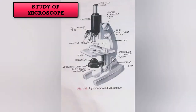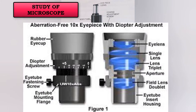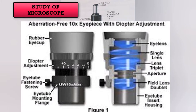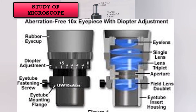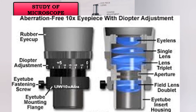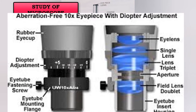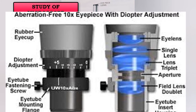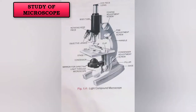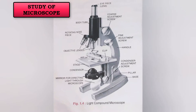Let us study the different parts of the compound microscope. First is the eyepiece. It helps to observe the magnified real images. It has a lens at the top of the microscope, and the eyepiece contains magnification of 5x, 10x, and 15x. Next is the draw tube. It is used to fit the eyepiece inside the body tube.